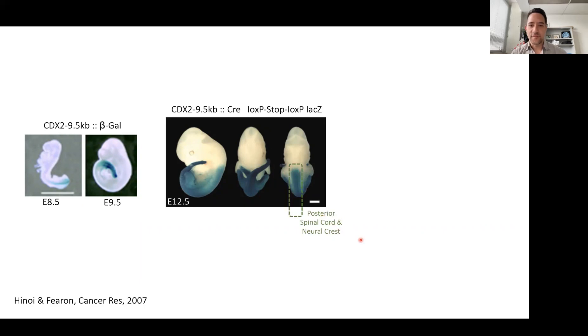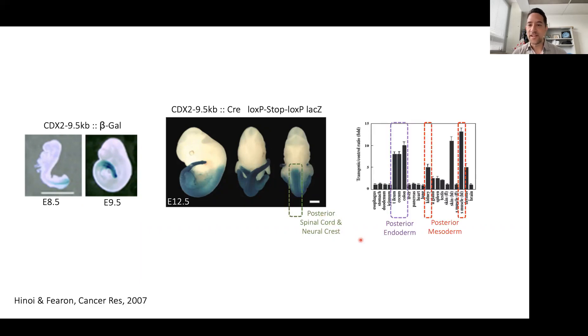When this group looked more at internal organs, they found the same pattern. For example, endodermal organs such as the stomach and the duodenum, which are more anterior, these organs were not labeled, but the posterior endodermal organs of the cecum and the colon were.